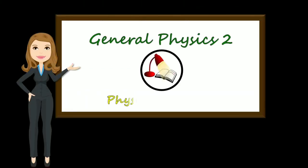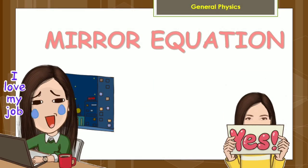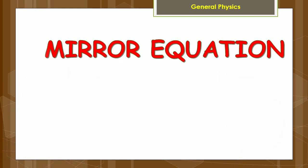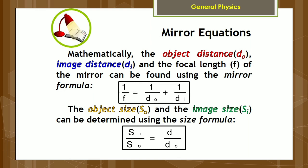General Physics 2 is brought to you by Physics Classroom. After a thorough exploration of how images are formed in spherical mirrors, let's associate what we have learned by studying the mirror equation mathematically. The object distance d sub o, image distance d sub i, and the focal length f of the mirror can be found using the mirror formula. The object size s sub o and the image size s sub i can be determined using the size formula.